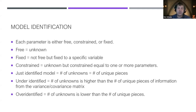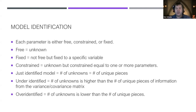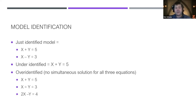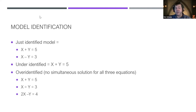A just-identified model means unknowns equal the unique pieces from the variance-covariance matrix — you'll get perfect model fit because no alternative models can be tested. Under-identified means more unknowns than unique pieces — the model will fail to run. Over-identified means fewer unknowns than unique pieces, which allows us to test different model types. We're really hoping for over-identified.